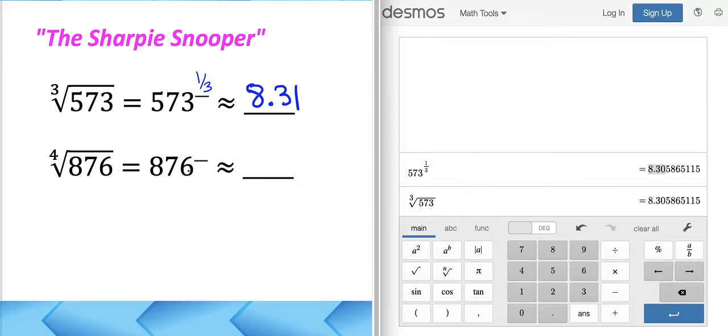And my eights are goofy looking. All right. So let's try again. Let's try another one. Let's try 876 to the fourth root or find the fourth root of 876. I'm going to take it to the one fourth power. That's the same move.